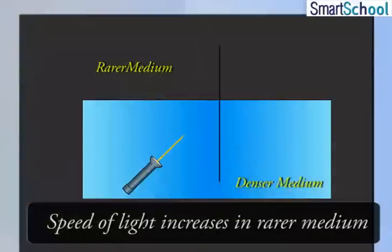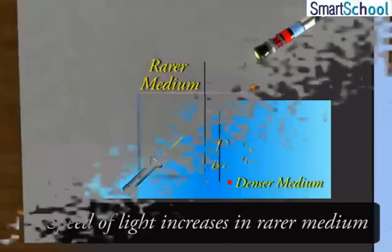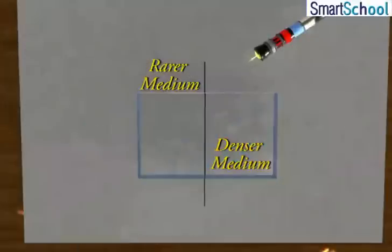Whereas, speed of light increases when it travels from a denser to a rarer medium. It is due to this change in the speed of light that the ray of light bends as it goes from one medium to another.